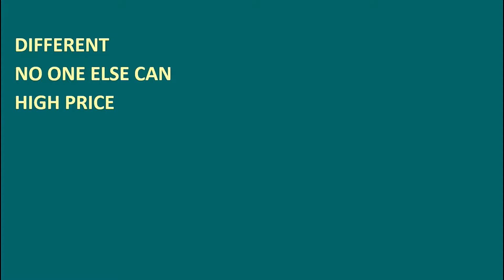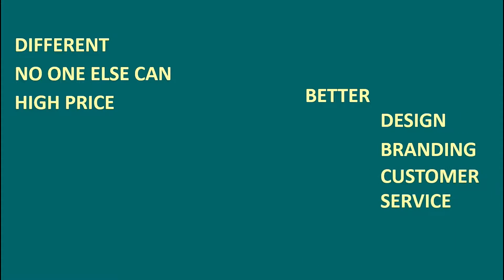Product differentiation has to be achieved through superior functions and features of the products. Companies can also charge a high price for better design, branding, and customer service. A great example is the iPhone — they have iOS, which is unique to them, and their phones are a little bit costlier than competitors. Companies that provide differentiated products or services can definitely charge a premium price.